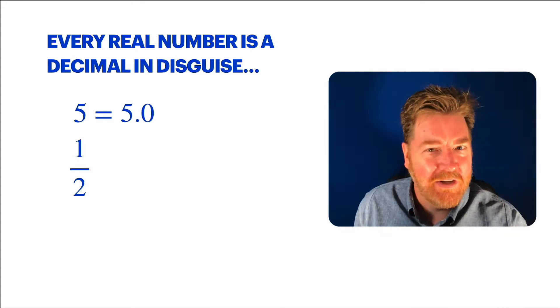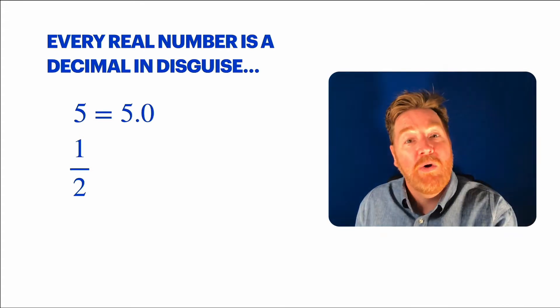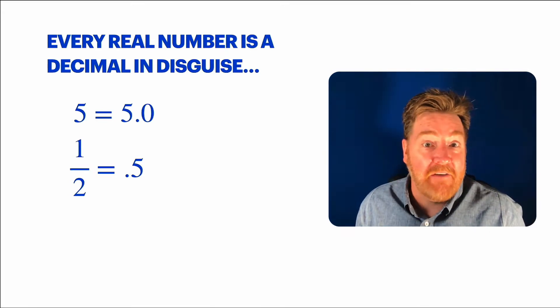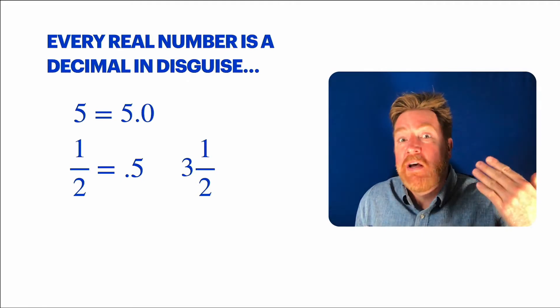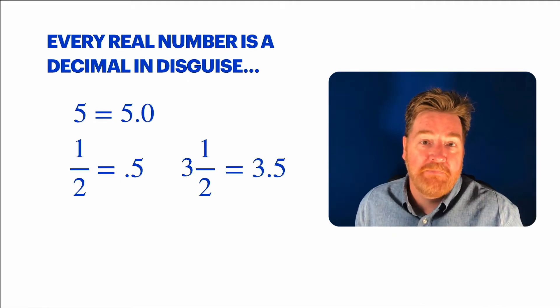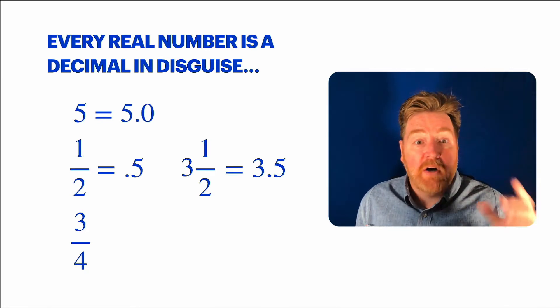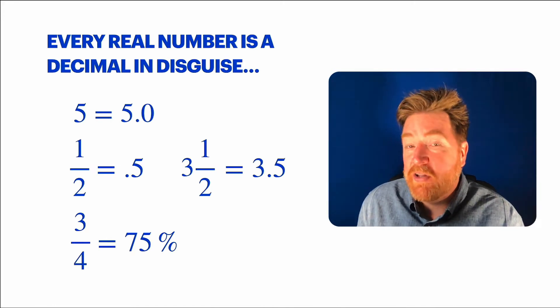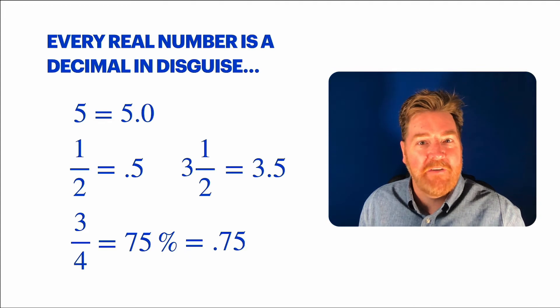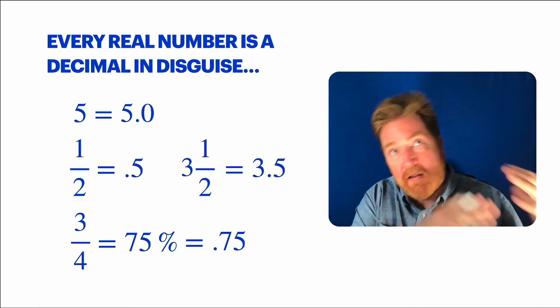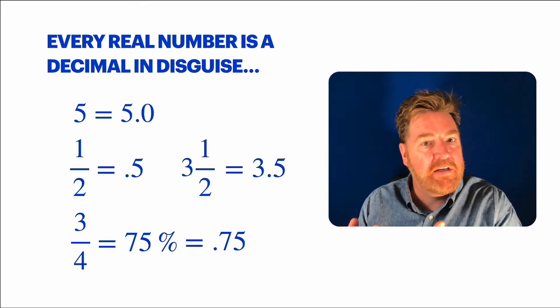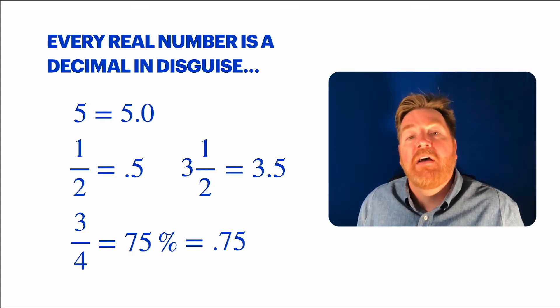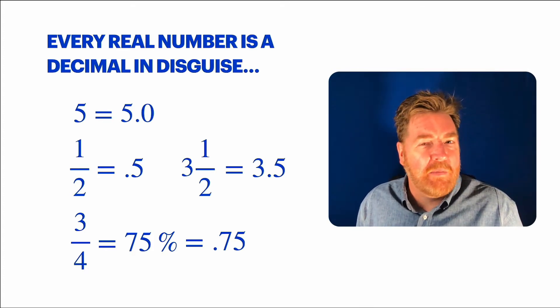Here's a fraction. That doesn't look like a decimal, but we know that we can write it as a decimal in the form of 0.5. And lots of other mixed numbers with half in it, like 3.5, we know them as decimals as 3.5. Other fractions like 3/4, well, we know that one is a famous percent, right? That's 75%, which means 75 hundredths, and game over. There's our decimal, 0.75.